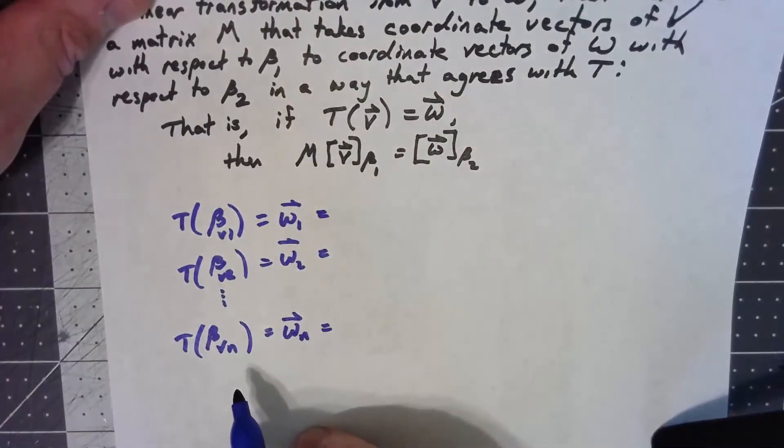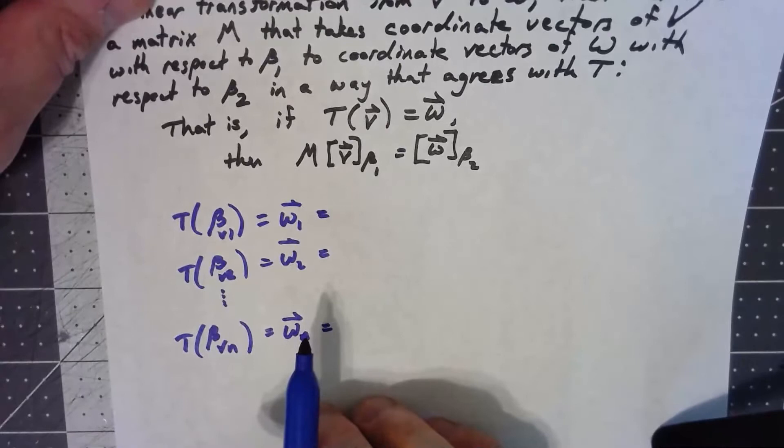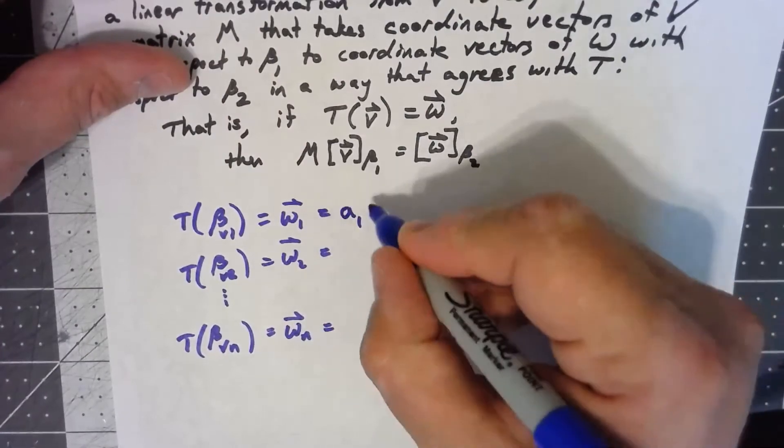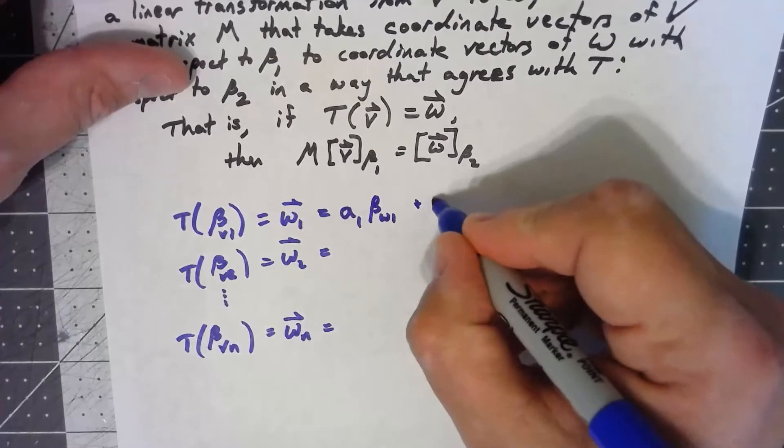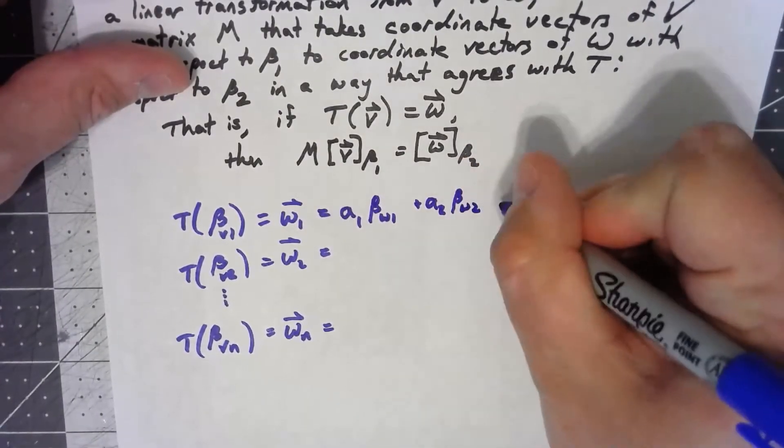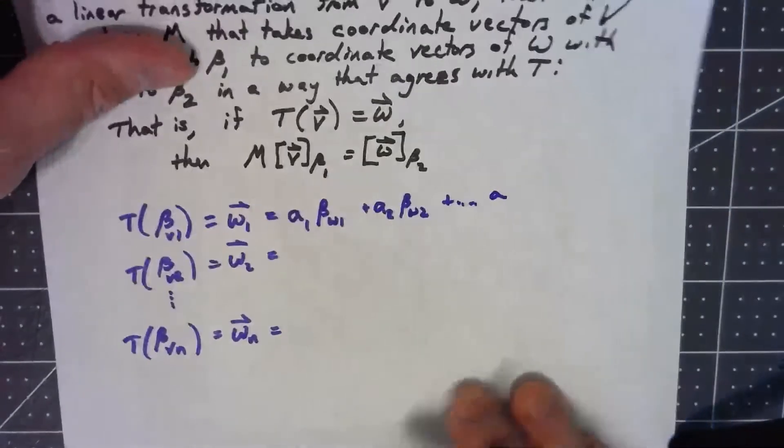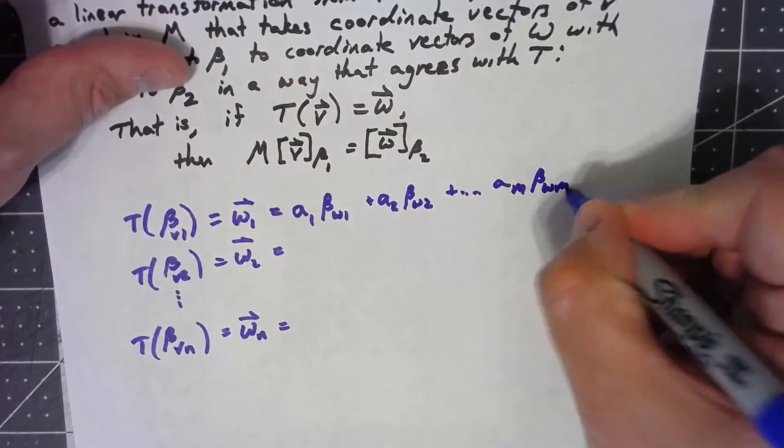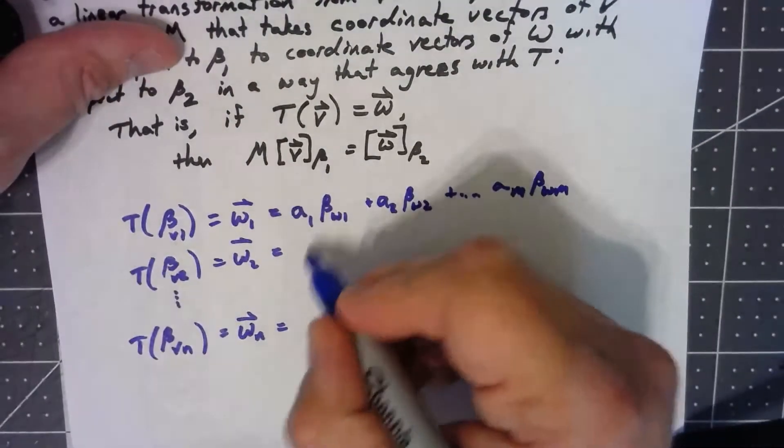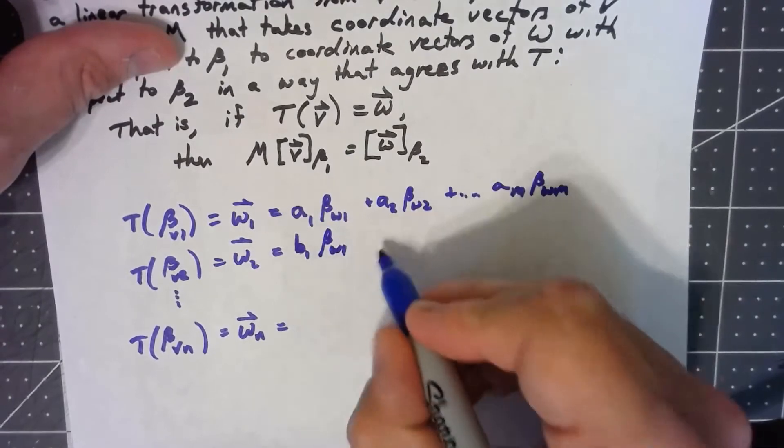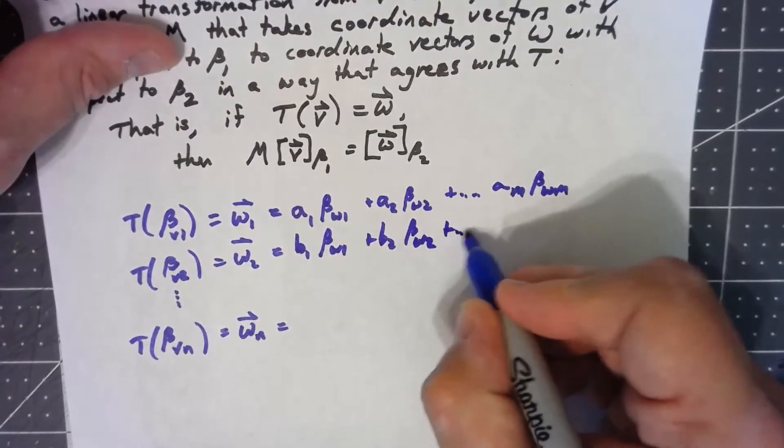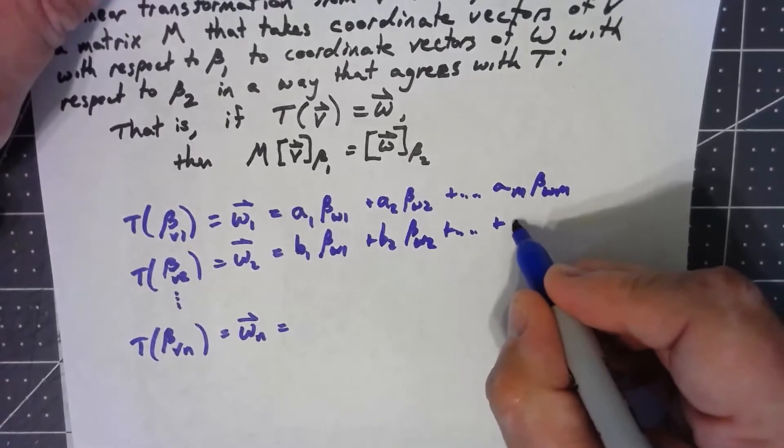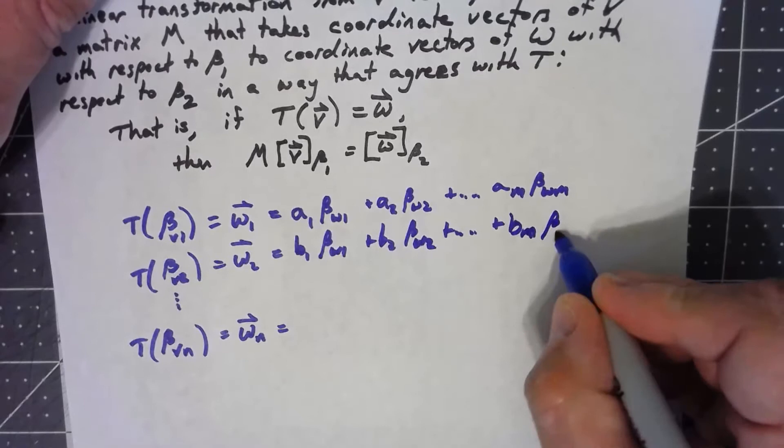And because these are the elements of W, each one can be represented uniquely as a linear combination of elements in beta 2. So this is some A1 times beta W1 plus A2 times beta W2 all the way up to, it doesn't have to have n, so let's give it a different thing, AM times beta WM. And here I'll have B1, B2, up to BM times beta WM.